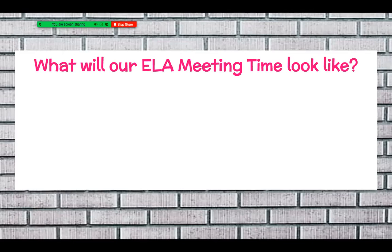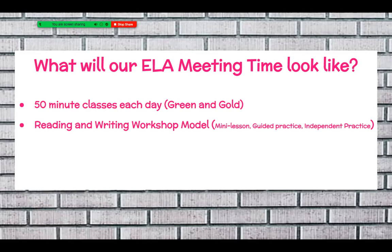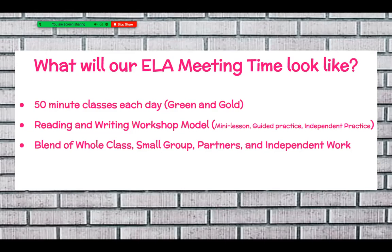So what will that time look like? Our class periods run a total of 50 minutes each day — 50 minutes on a green day and 50 minutes on a gold day. In English Language Arts, we utilize the reading and writing workshop model, meaning typically our day will start with a mini lesson on a concept. We'll spend some time practicing that concept together and then students will be sent off to do some independent practice and possibly meet in small groups. So there's a blend of whole class instruction, small group instruction, partner time, or independent work. This allows me to offer more individualized attention to questions or things students might need my assistance with.